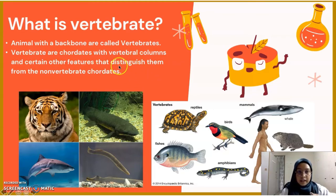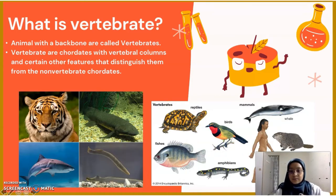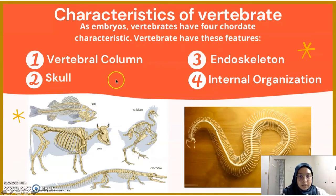Vertebrates consist of fishes, reptiles, birds, mammals, and amphibians. Humans and groundhogs are under mammals. The four characteristics of vertebrates are: the vertebral column, the skull, the endoskeleton, and internal organization.